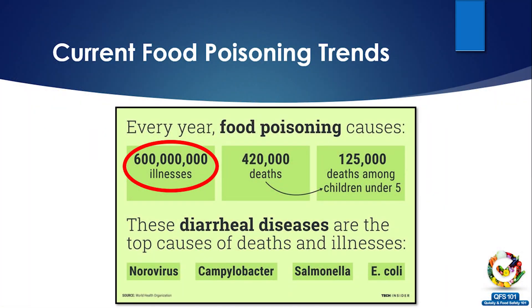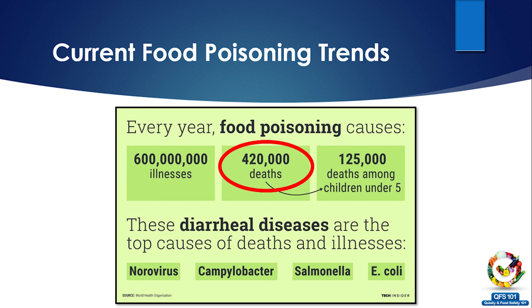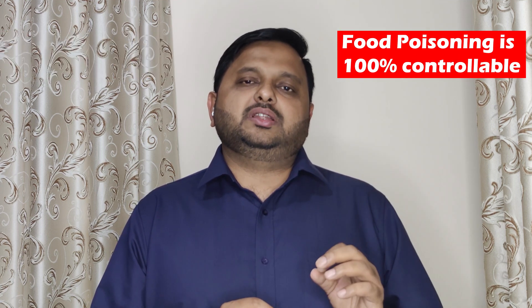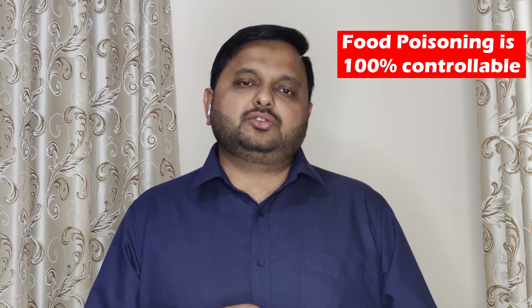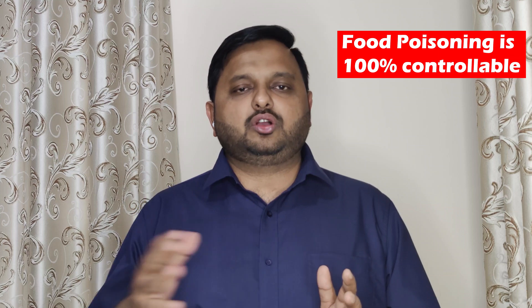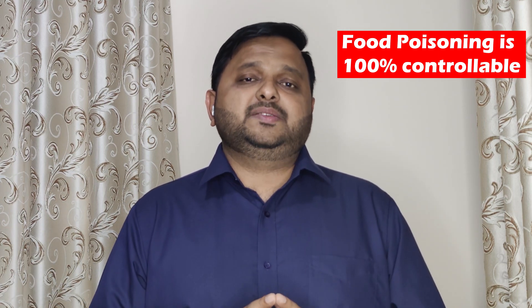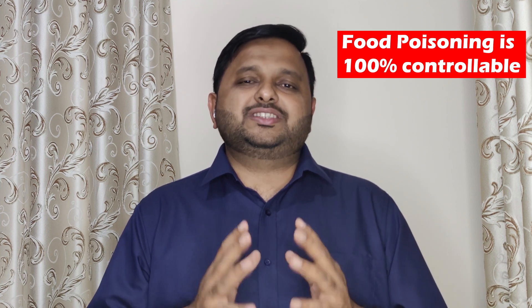As I discussed in the introduction to food safety video, food poisoning is not a small thing. More than 600 million people in one year get food poisoning, and out of that 400,000 plus can die from this disease, and amongst them more than 100,000 are children. These are the statistics on your screen right now. This shows that food poisoning is a massive problem and we need to control it.